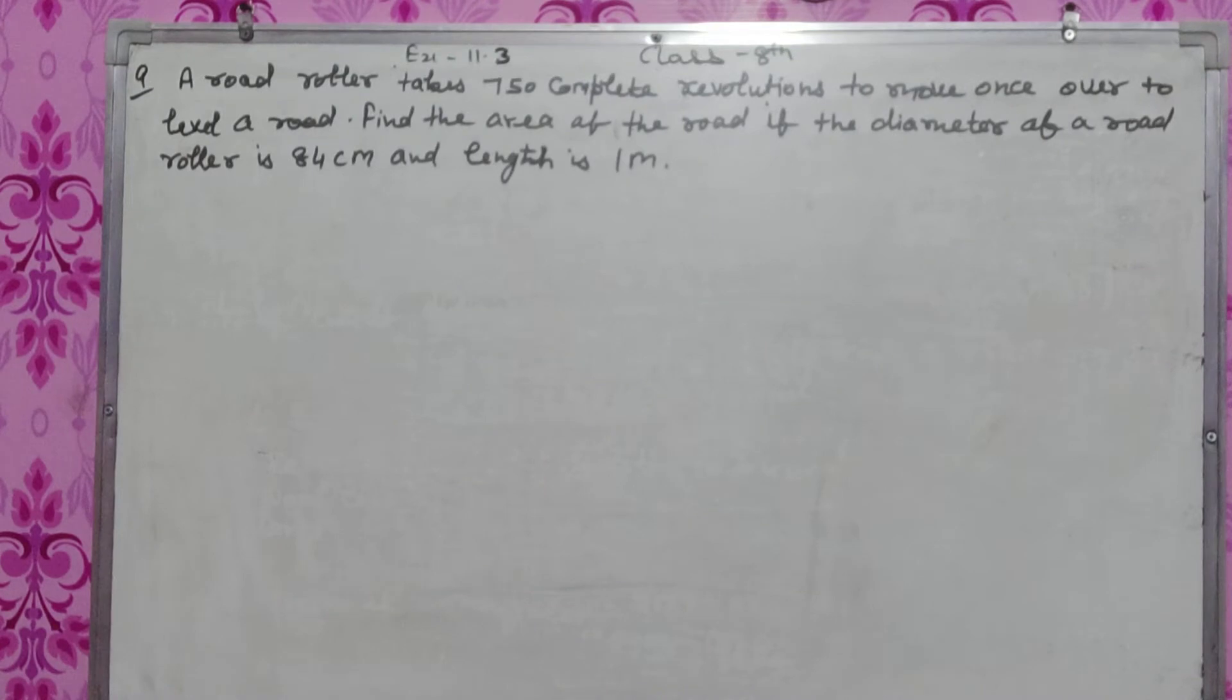I'm going to solve question 9 from exercise 11.3 for class 8th. A roller takes 750 complete revolutions to move once over to level a road. Find the area of the road if the diameter of the roller is 84 cm and length is 1 meter.